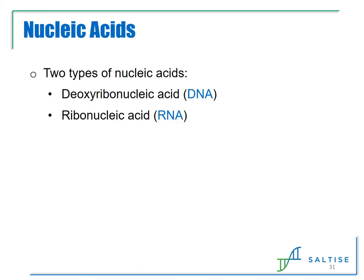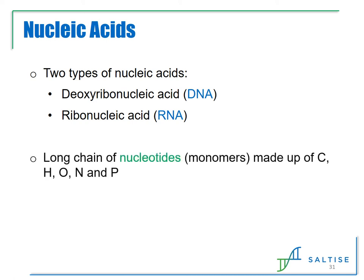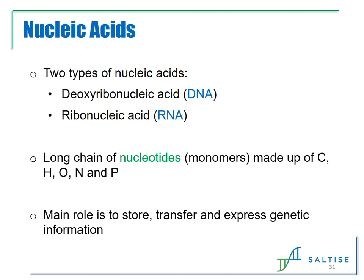The final major category of biomolecules is nucleic acids. There are two types depending on the sugar that is attached: deoxyribonucleic acids, known as DNA, and ribonucleic acids, known as RNA. Nucleic acid is made up of a long chain of monomers called nucleotides, and the atoms found in the large molecules are carbon, hydrogen, oxygen, nitrogen, and phosphorus. The main role of nucleic acids is to store, transfer, and express genetic information — in particular, the information needed to create proteins in the cell.